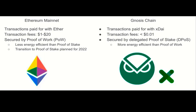Instead of using Ether to pay for transactions, it uses a stablecoin called XDAI, valued at 1 USD. It's worth mentioning that the Gnosis chain is secured by proof-of-stake consensus, which is much more energy efficient than proof-of-work.